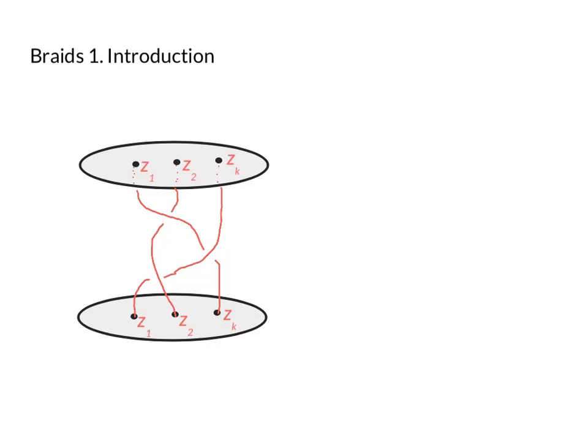So we're going to be talking about braids. A braid is a collection of strands connecting some points to some other points. Here in the picture you can see we've got K points down at the bottom, in this picture K equals 3.